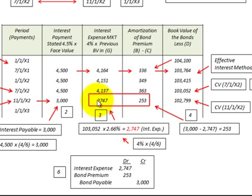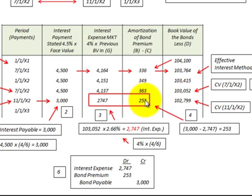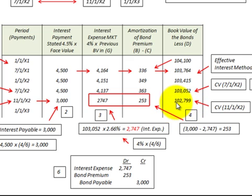That $2,747 is what we recognize as interest expense on the income statement. Subtracting it from the interest payable of $3,000, we get a bond premium amortization of $253. Subtracting that from the beginning carrying value of $103,052 gives us an updated carrying value of $102,799 at the redemption date.